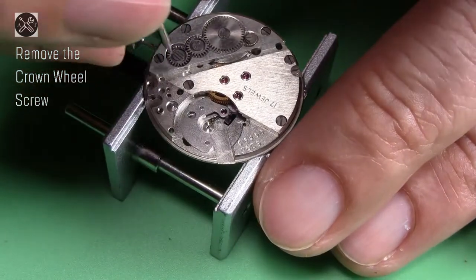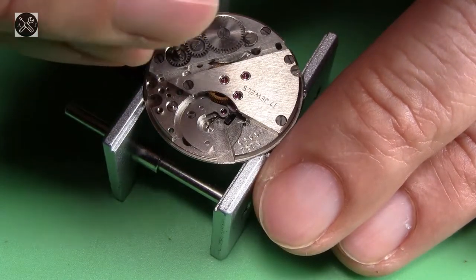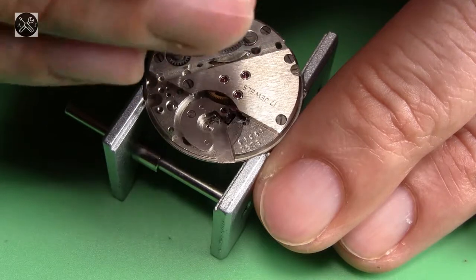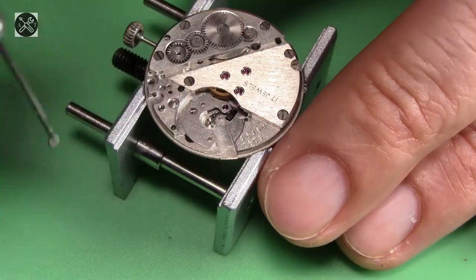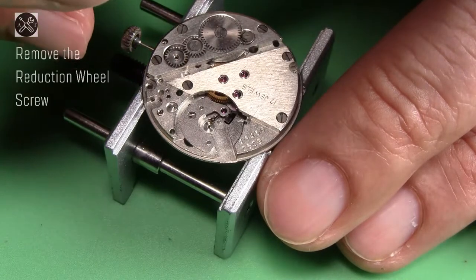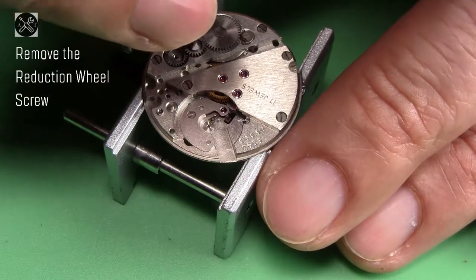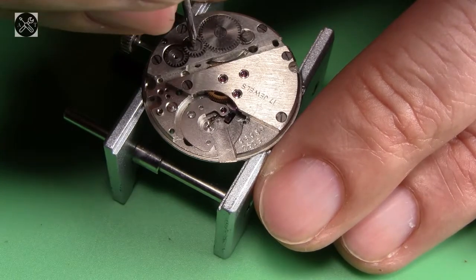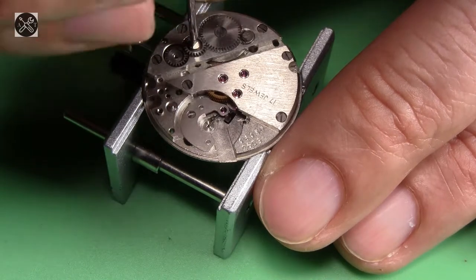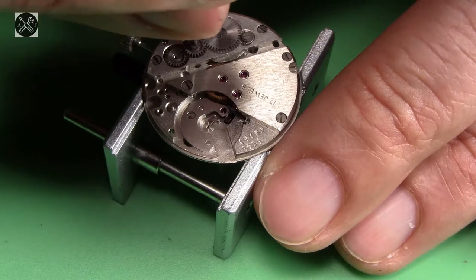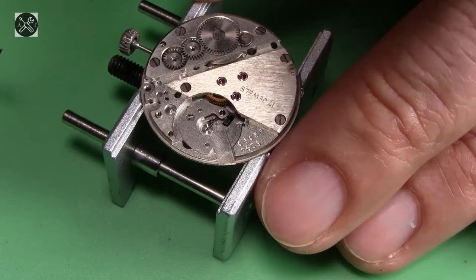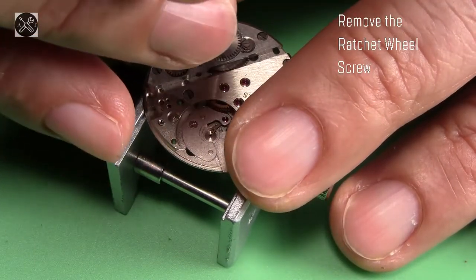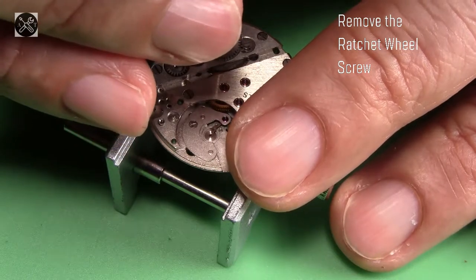Start with the crown wheel screw. This is a left-threaded screw, by the way, which means to tighten it, you turn it left. That's counterclockwise, and if you want to tighten it, you turn it left, and if you want to loosen it, you turn it right. And screw on the intermediary wheel, and the ratchet screw.